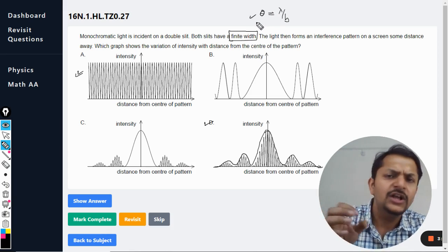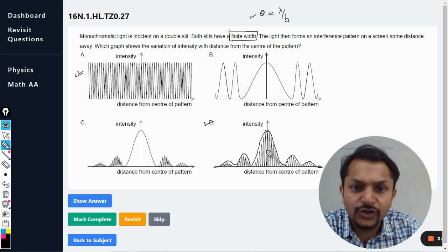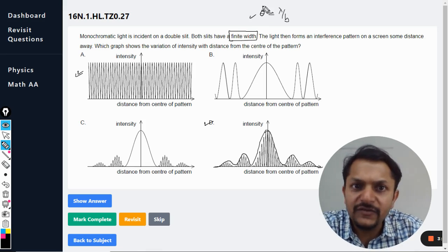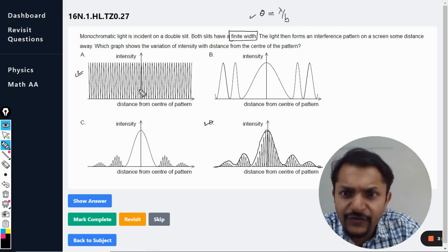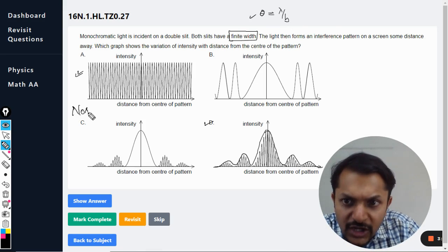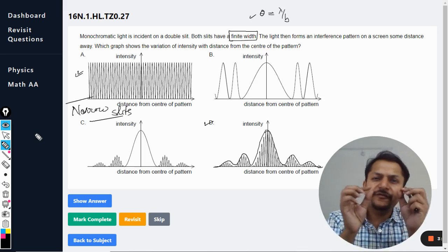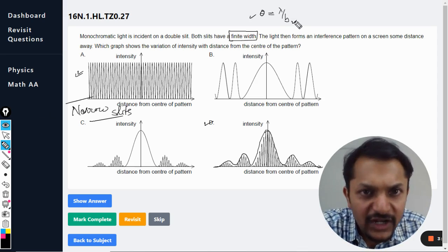How can you say that the effect of the diffraction should be really very small? So theta should be really very large. If theta is large, it means b should be really very small. So this kind of pattern will come if you are using very narrow slits.